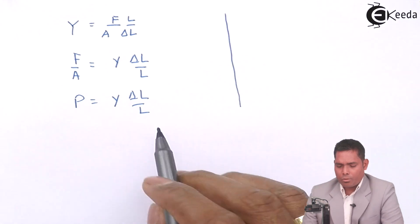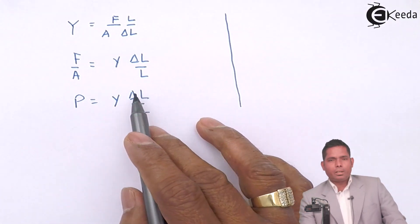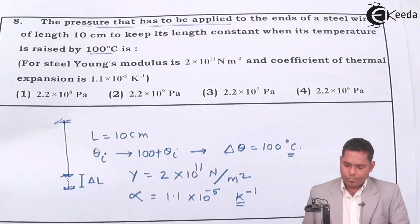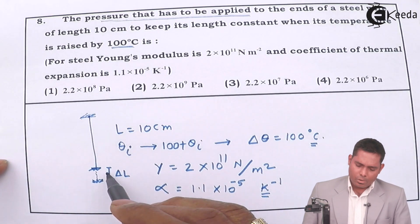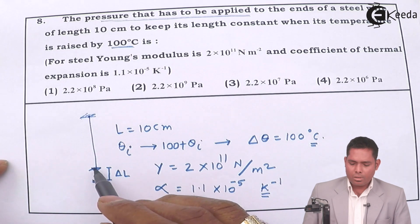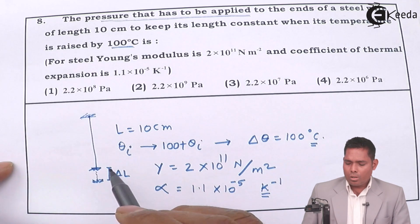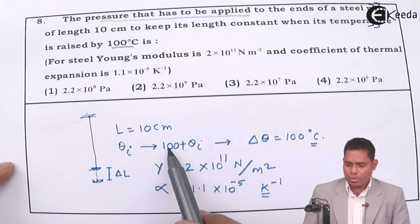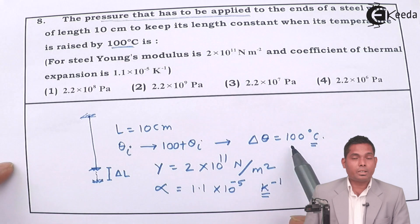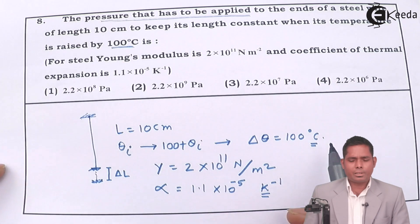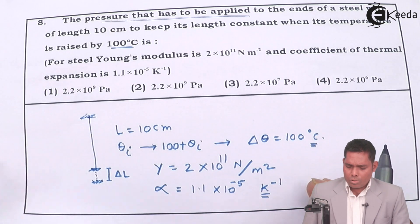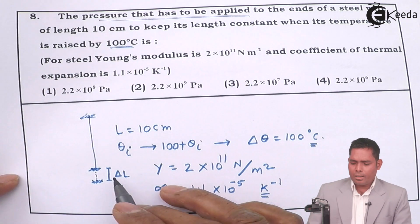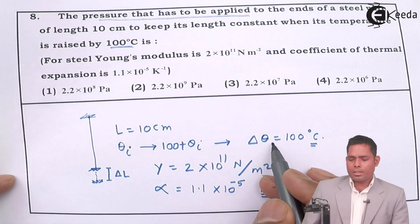From the given data we have Y and L, but we don't have δL directly. The δL corresponds to the expansion the wire undergoes when heated from θᵢ to θᵢ + 100. So we need to relate δL to the change in temperature Δθ.